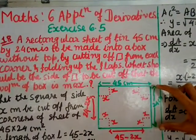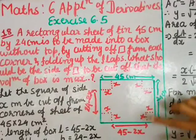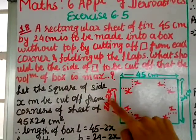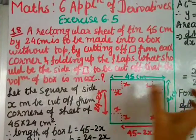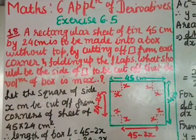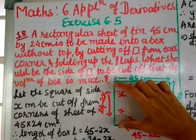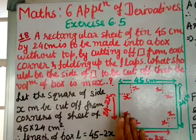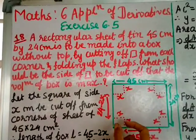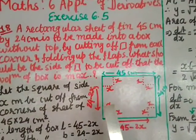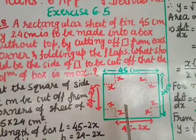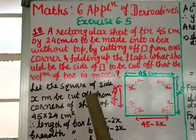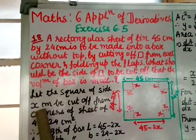The total length is 45, so after cutting x from both ends, the remaining length of the top of the box will be 45 minus 2x. Similarly, the width is 24; after cutting x from both sides, the remaining width will be 24 minus 2x. When we fold up the flap, x becomes the height of the box.